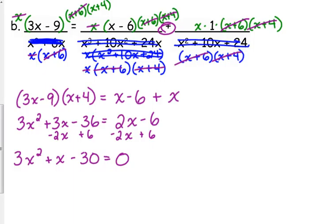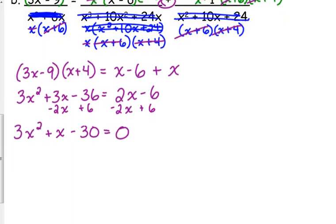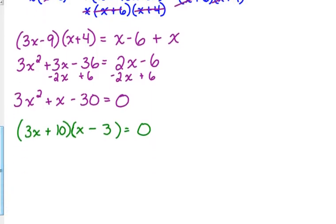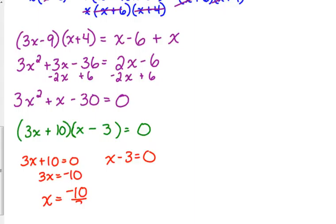And we need to factor. That's how we solve quadratics. So 3X times X is going to give us 3X squared. How about we do 10 and 3? We need positive 10 minus 9 because that 3 is going to get multiplied by that other 3. That's going to give us the positive X in the middle. And then last step, set both of those equal to 0 and solve for X. So one solution is negative 10 thirds. The other solution is 3.